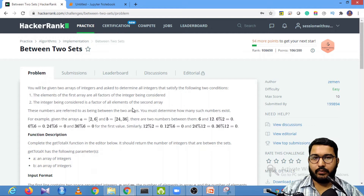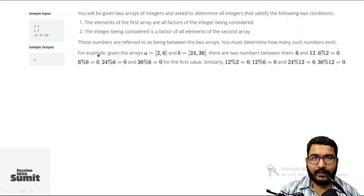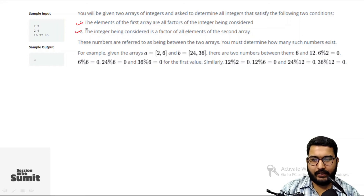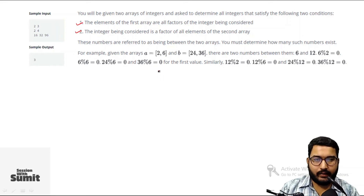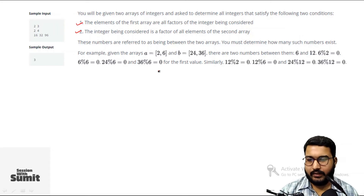We need to find all numbers satisfying these conditions. The challenge is we don't know the range. To find the range, we will use the mathematical concepts of LCM and HCF. LCM stands for Least Common Multiple — it is the least value divisible by all numbers in your series.